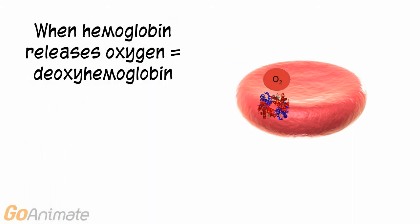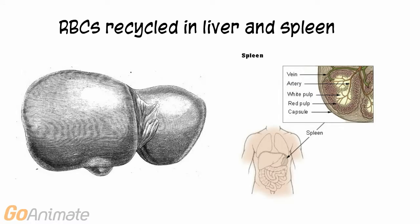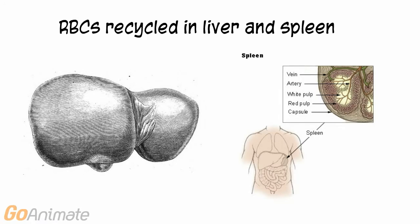Hemoglobin releases oxygen in the tissues to form deoxyhemoglobin. Red blood cells live for about 120 days. They are then recycled in the liver and spleen.